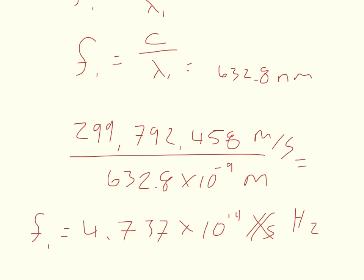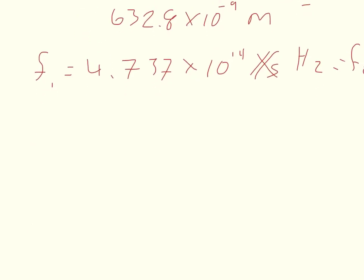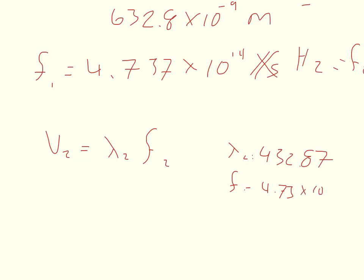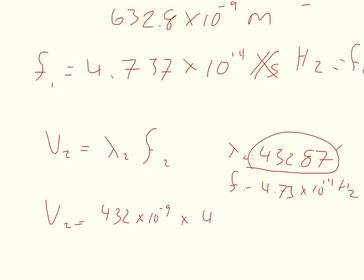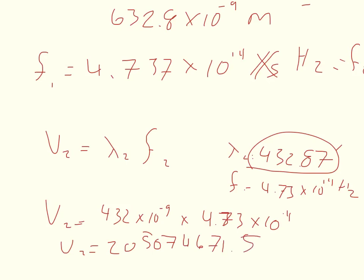This frequency F1 also equals F2. Now the last part asks for velocity in the solution. The velocity in medium 2 equals wavelength 2 times frequency 2. We already solved both: wavelength 2 is 432.87 nanometers, frequency is 4.73 times 10 to the 14th hertz. Converting nanometers to meters by multiplying by 10 to the negative ninth, V2 equals 432.87 times 10 to the negative ninth times 4.73 times 10 to the 14th, giving 205,074,671.5 meters per second.